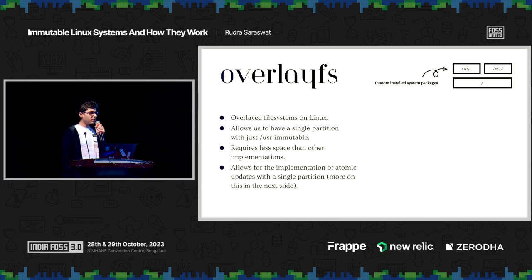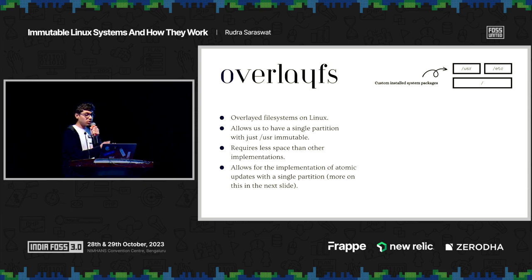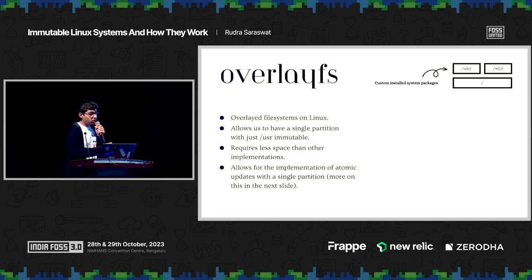OverlayFS also allows us to implement atomic updates with a single partition, which I will come to later. And it allows us to install system packages without having to disable immutability, as we can simply install any system packages with pacman to another user overlay. We can generate another user overlay using the system root as a base or lower directory. This is how we install regular system packages, like on Arch, to BlendOS, without having to disable immutability.